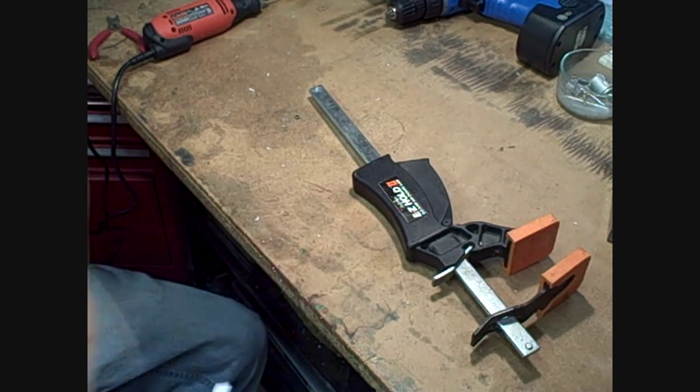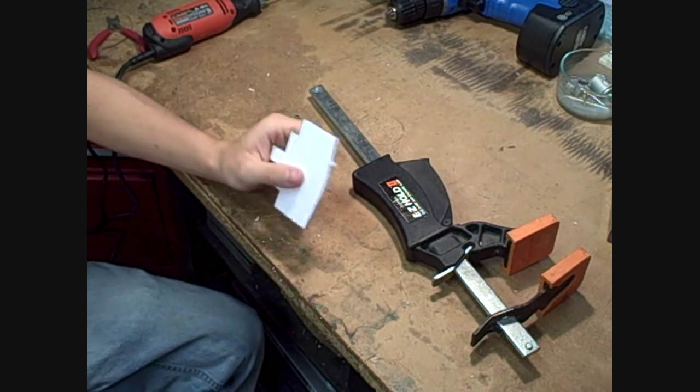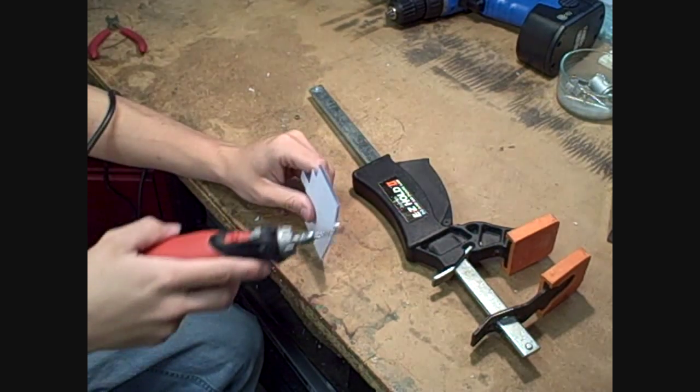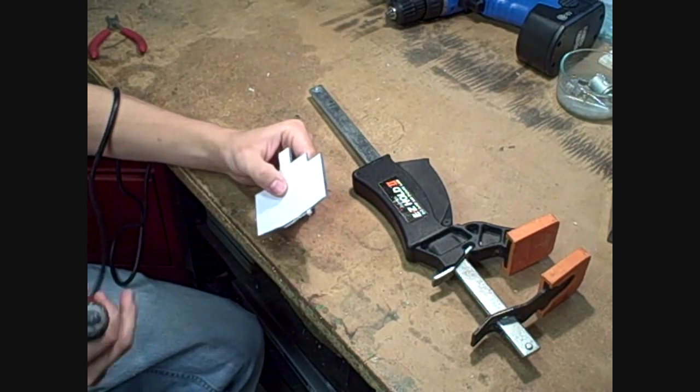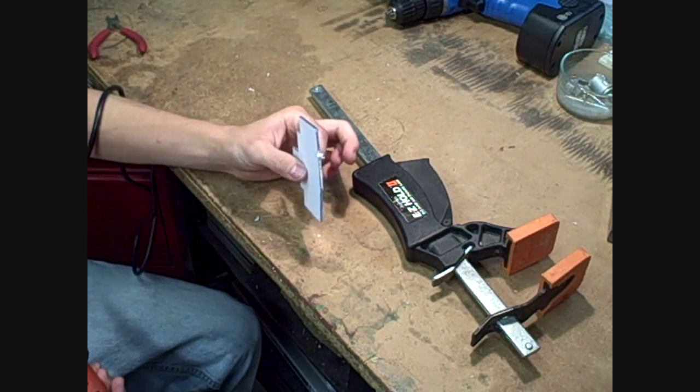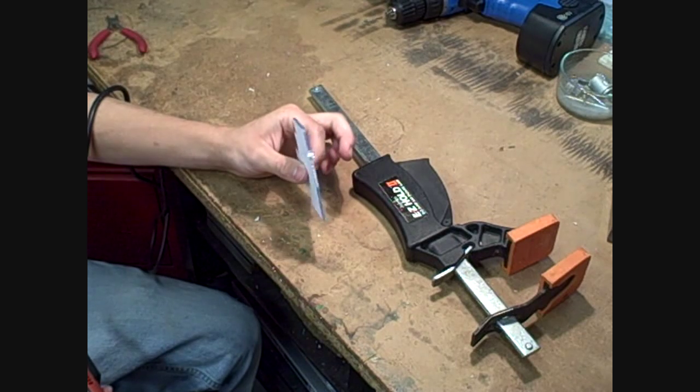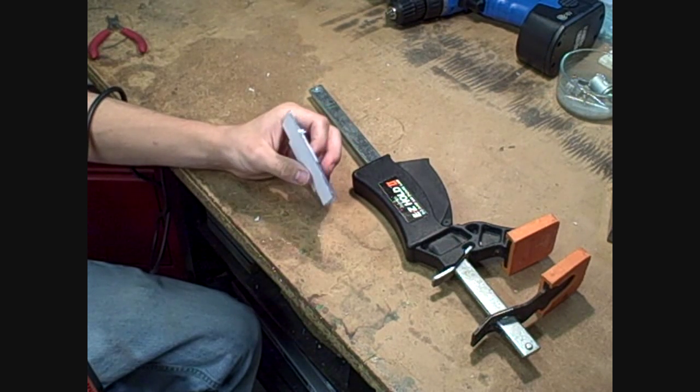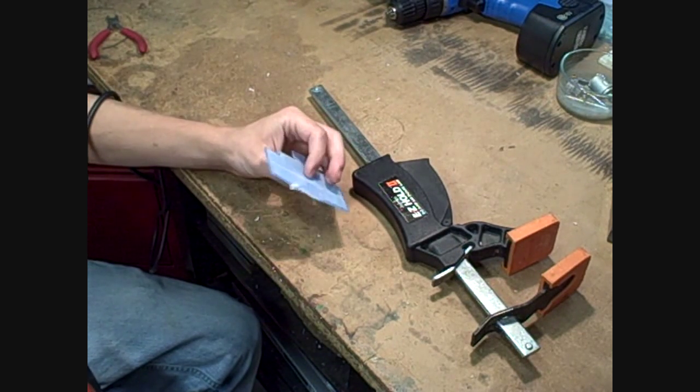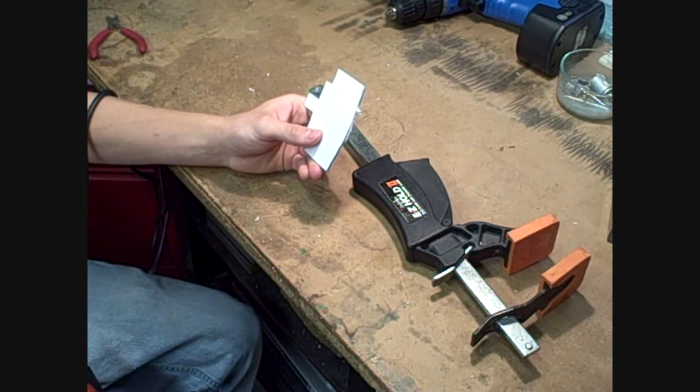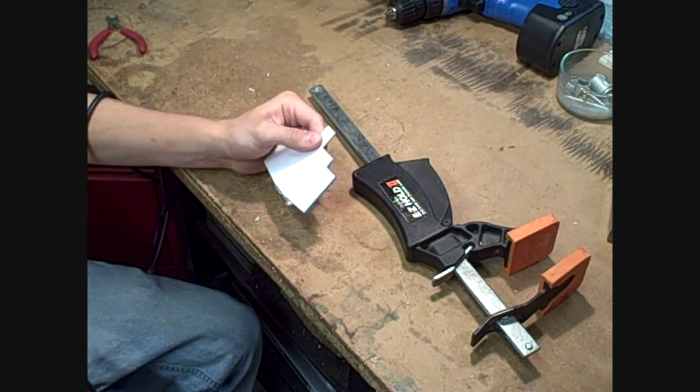Basically now what you're going to want to do since you already have your Dremel out, is you're going to want to take it, clean up your rough stuff, get it as close to it as you can without cutting the paper, but also keep trying to keep it somewhat smooth to make it easier to sand and get it nice and close to the paper and get it really smooth.